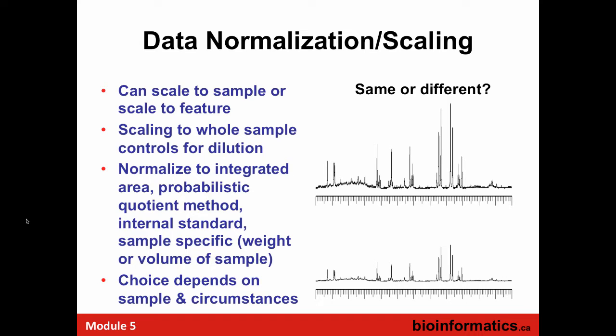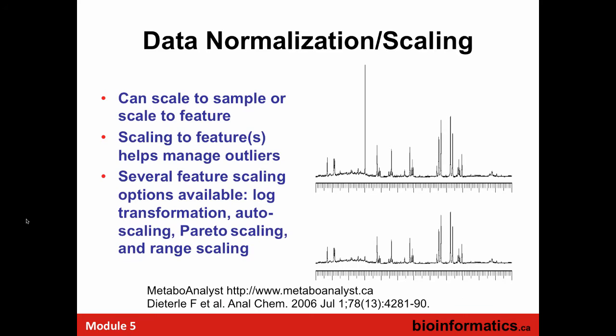Some approaches use total integrated area — this is an issue particularly important for urine analysis, and similar challenges with fecal water. There are other approaches using internal standards, sample weight, sample volume, and the probabilistic quotient method, which is more complex but seems to help. It depends on both the sample and the circumstances. Some people will choose to normalize to a specific feature — in the case of urine, people scale to creatinine. It's not always the best, but it's been used for a long, long time.